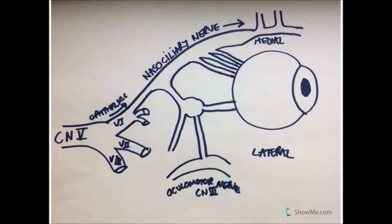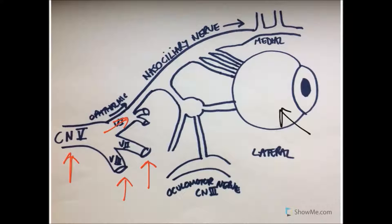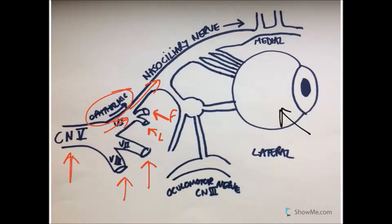Before we do that I'm just going to orientate you to this diagram. This structure over here is of course the eye and we've got some other structures that need to be named. We've got cranial nerve five over here with the mandibular division and the maxillary division. We're interested in the ophthalmic division, which divides into three: a lacrimal, a frontal, and the one we're interested in is the nasociliary.